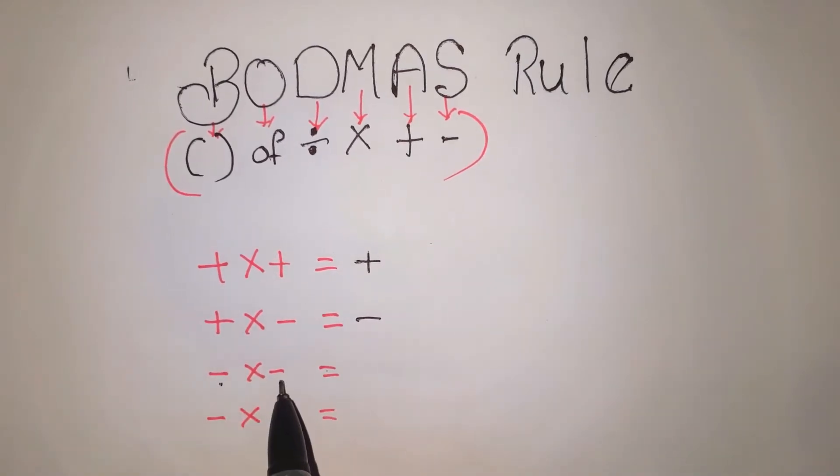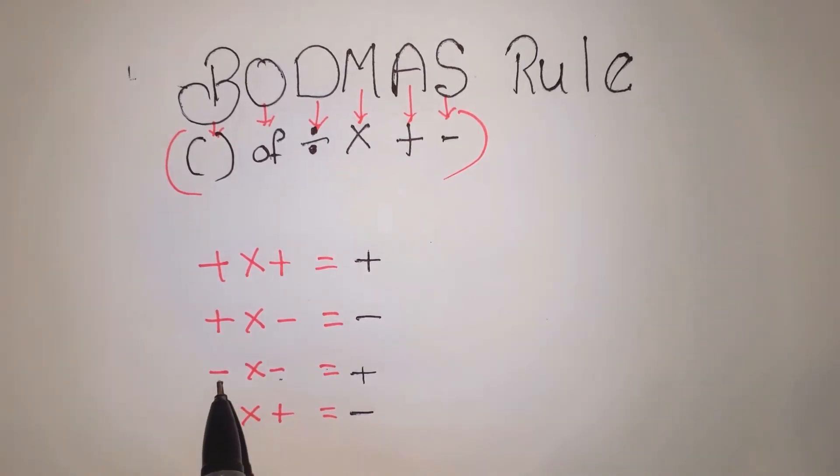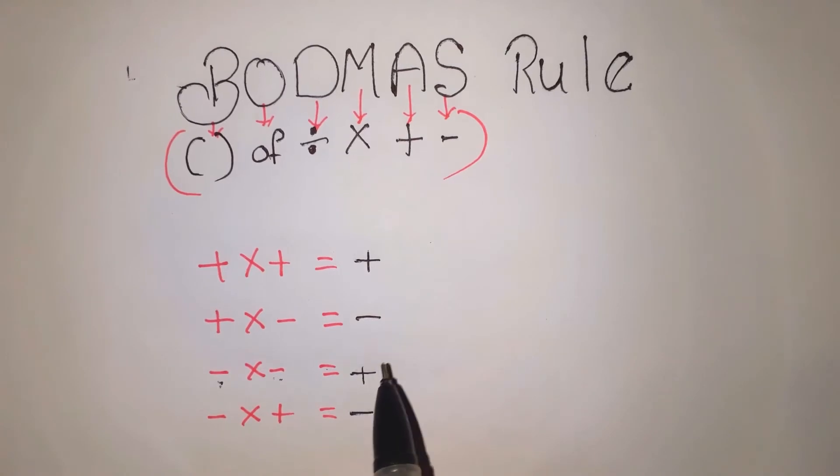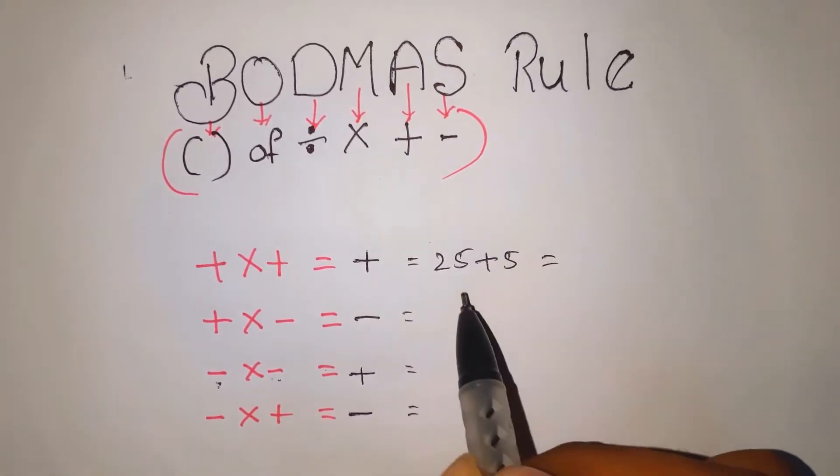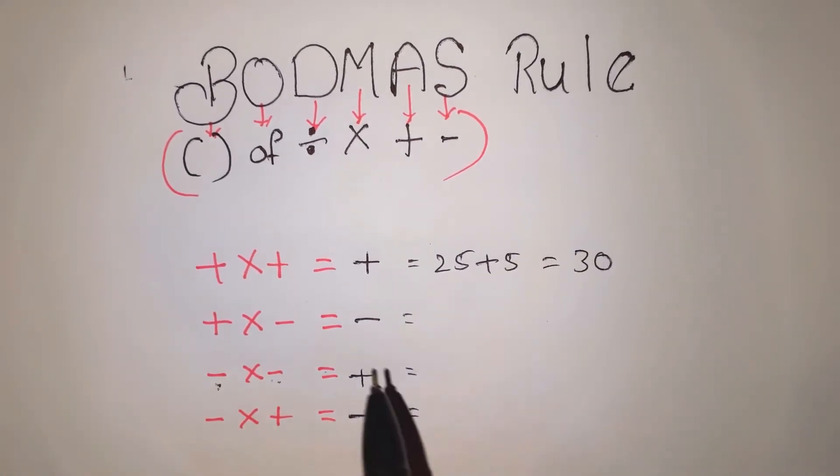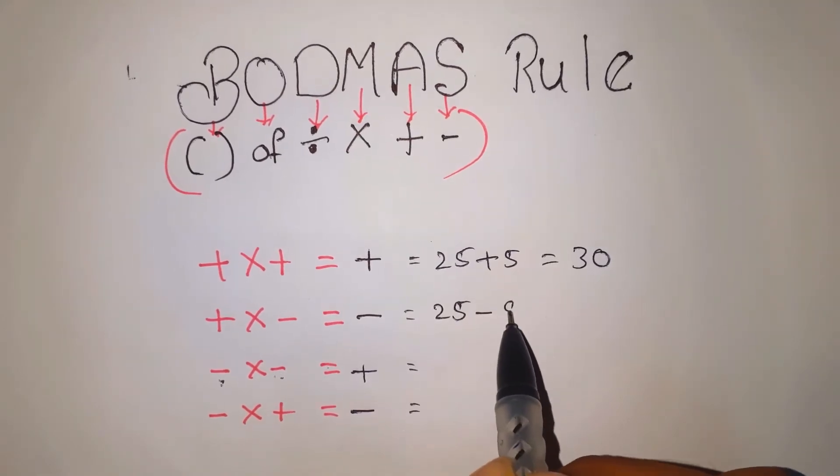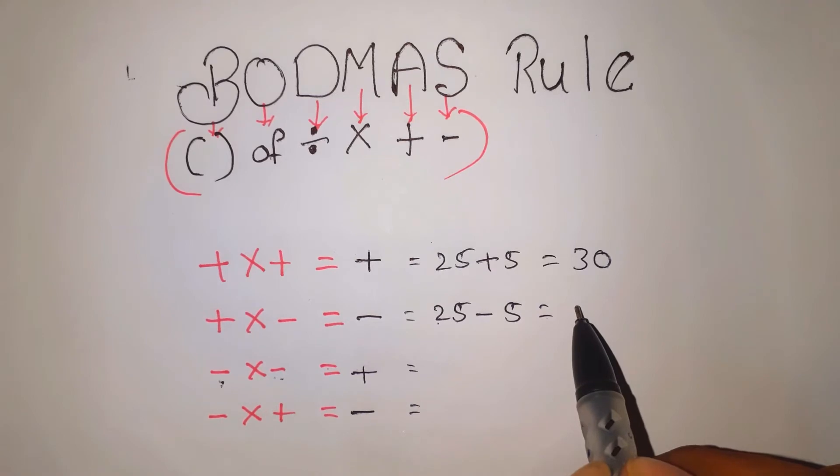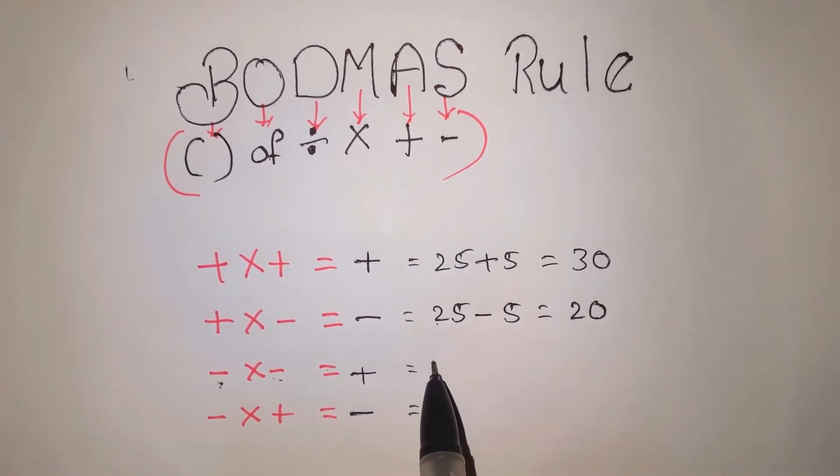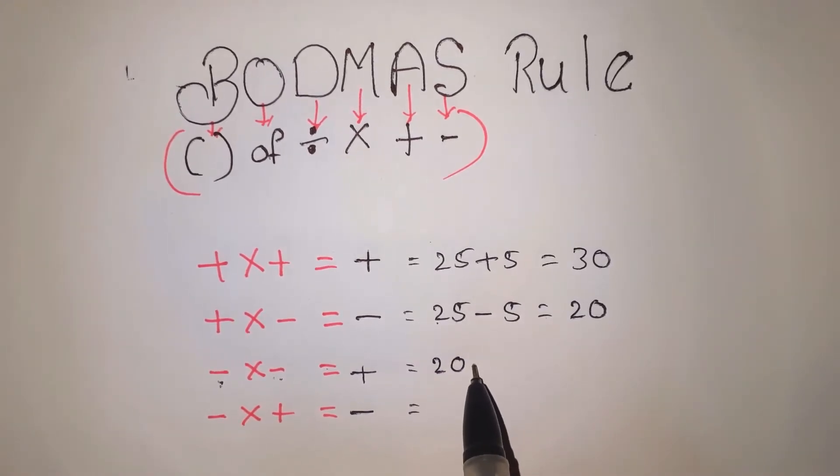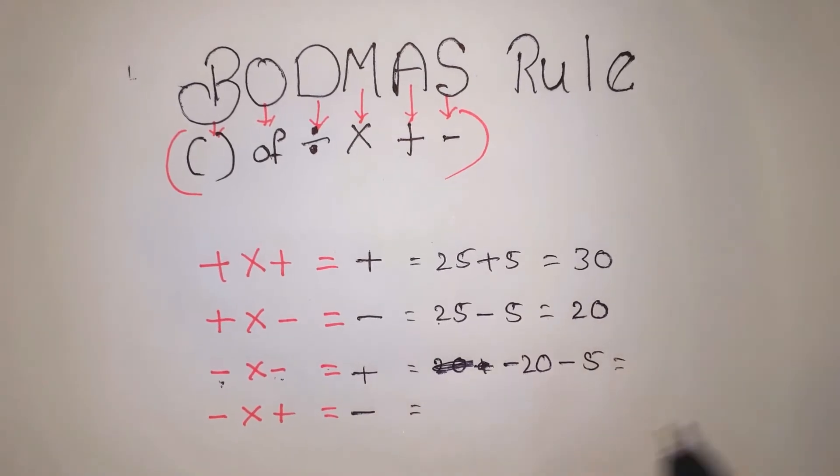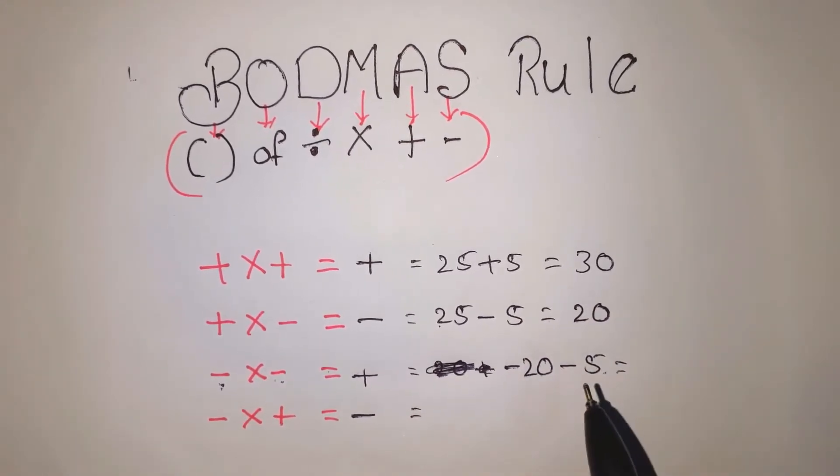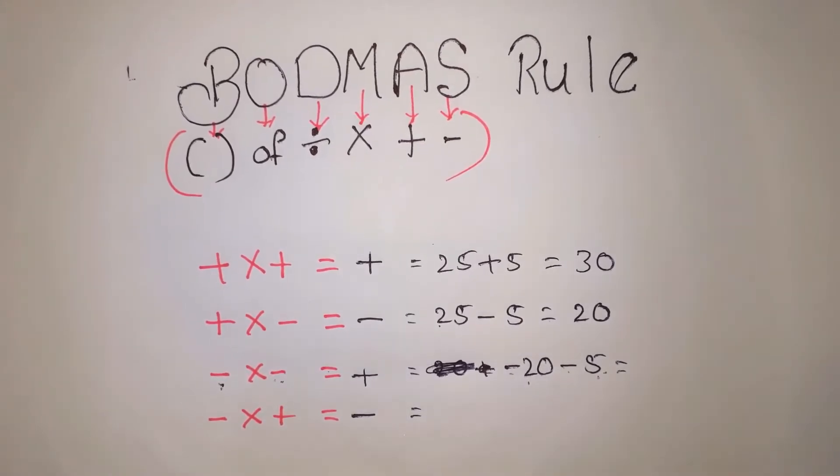Let me show you the same rule with example problems. 25 plus 5 equals 30. Next, 25 minus 5 equals 20. The difference is in the operation. Minus 20 minus 5 equals minus 25.